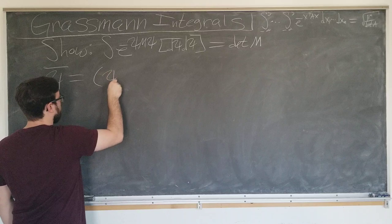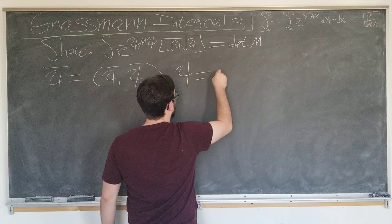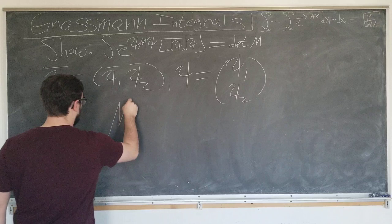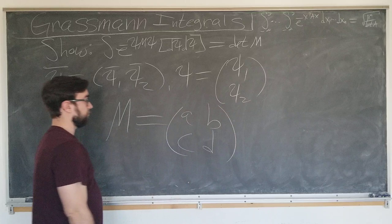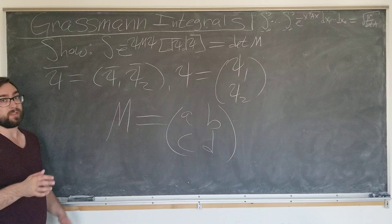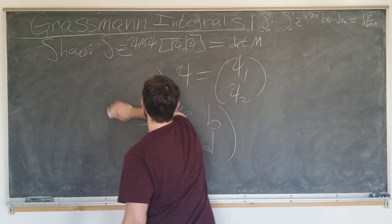We're going to define psi bar by the row vector, psi one, psi two. And psi will be the column vector, psi one, psi two. And we will have m as a two by two matrix, which are right in the typical form A, B, C, D, just for familiarity. Unfortunately, I can't leave this up. I don't have enough space, but just bear with me. We'll get there.